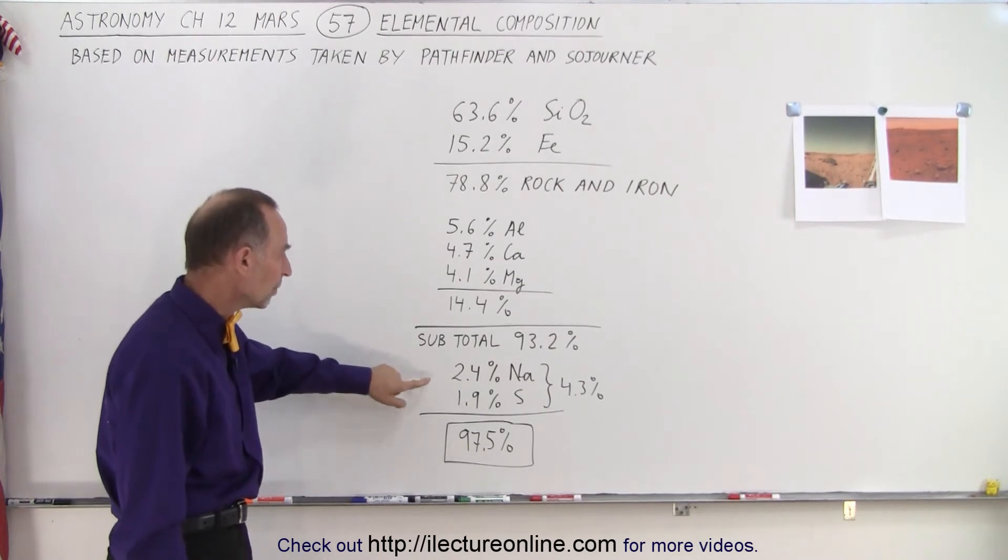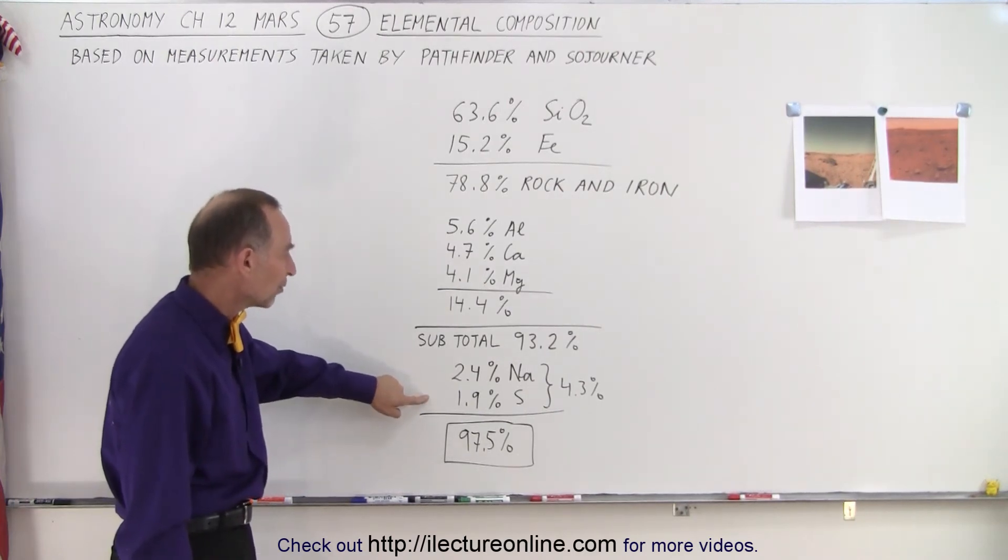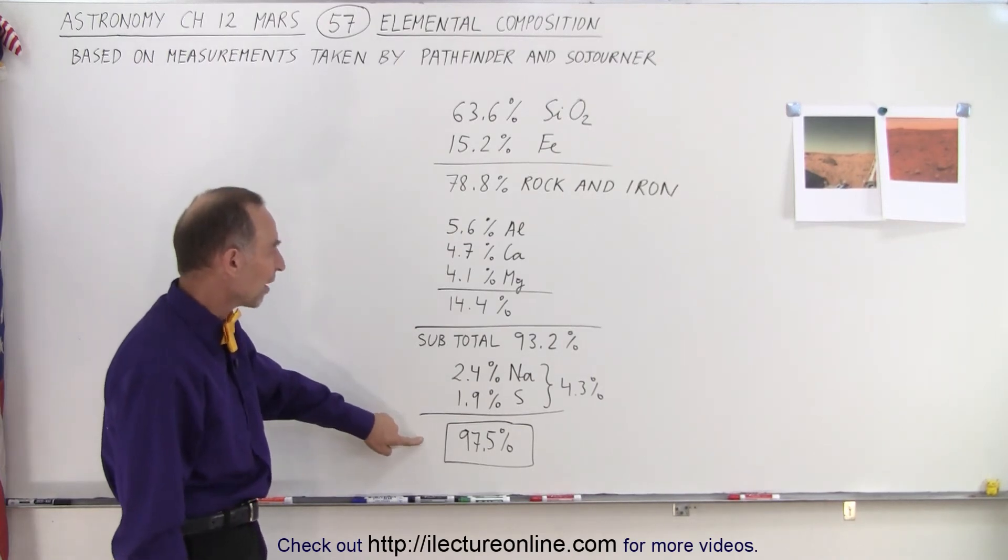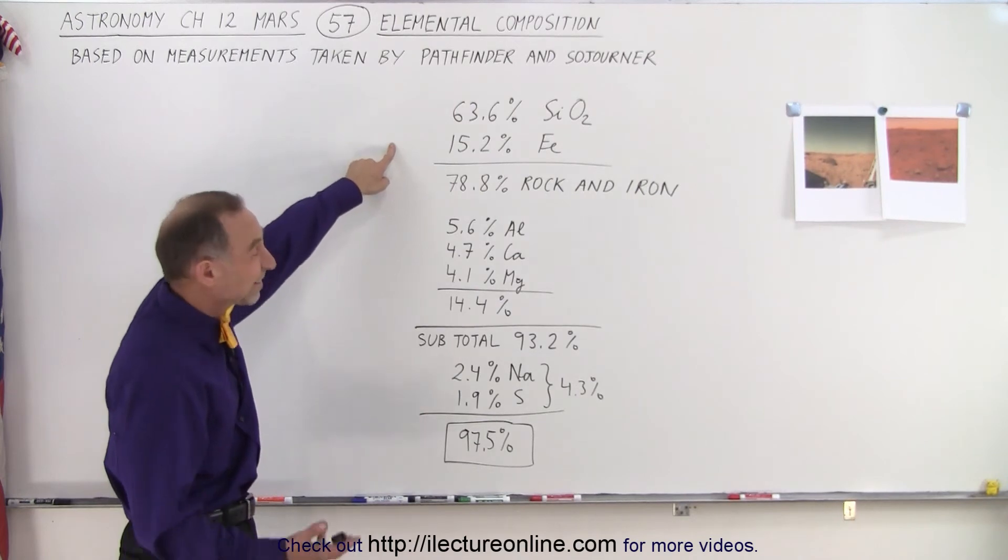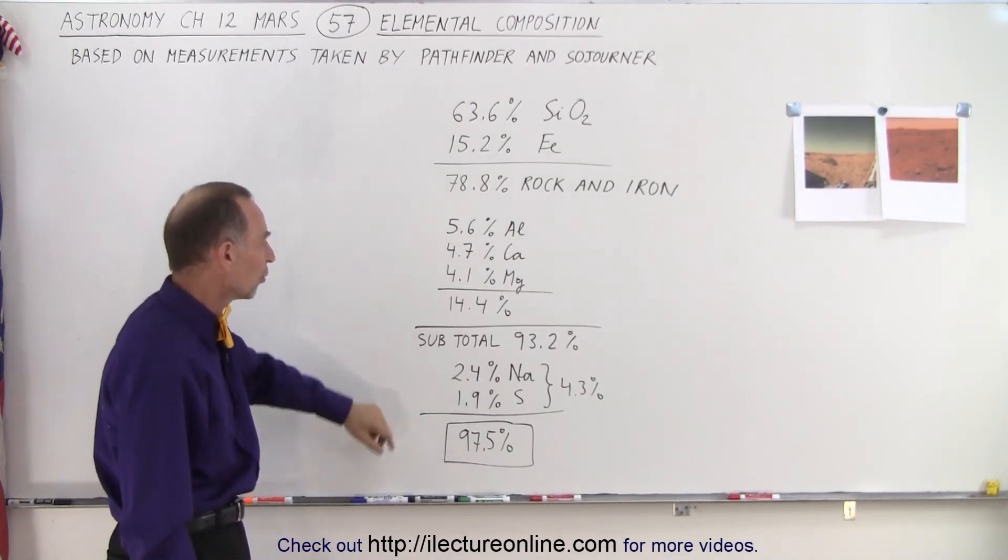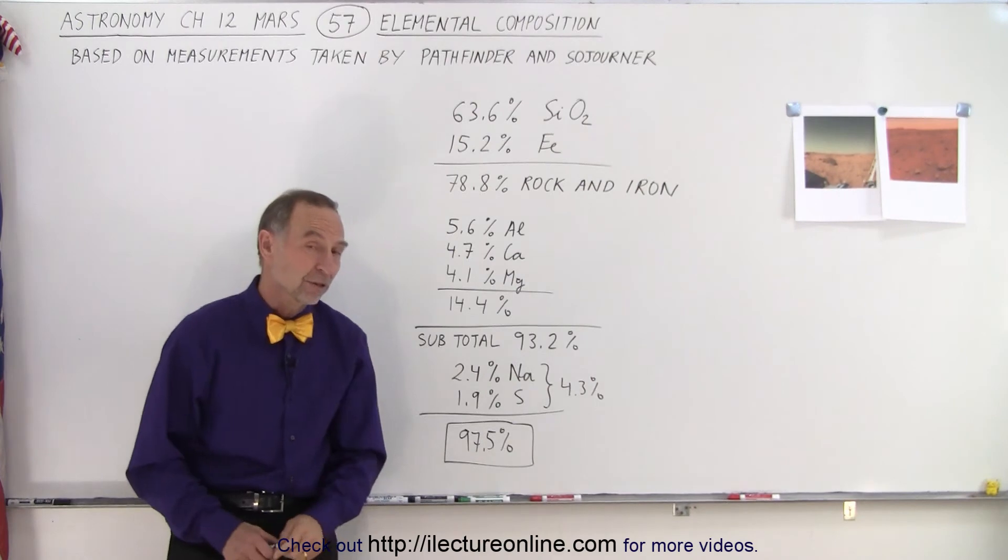Then there were a couple more, sodium and sulfur, that was found in relatively high concentrations. And so 97.5% of the soil at that landing site was silicon dioxide, essentially rock, iron, aluminum, calcium, magnesium, sodium, and sulfur.